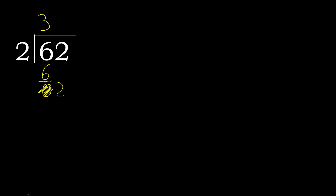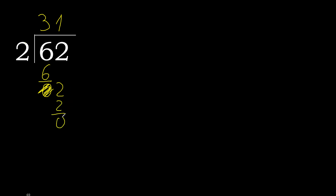Eliminate 0 on this side. Bring down 2. 2 multiplied by 1 is 2, which is not greater. 2 minus 2 is 0.